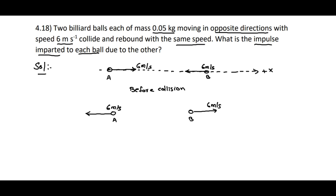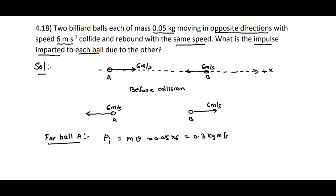Now discussing for ball A: the momentum of ball A before collision is m into v, that is 0.05 into 6, which equals 0.3 kg·m/s. The momentum after collision is m into (−6), that is 0.05 into minus 6, which equals minus 0.3 kg·m/s.